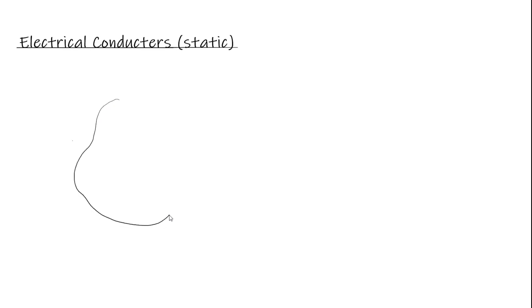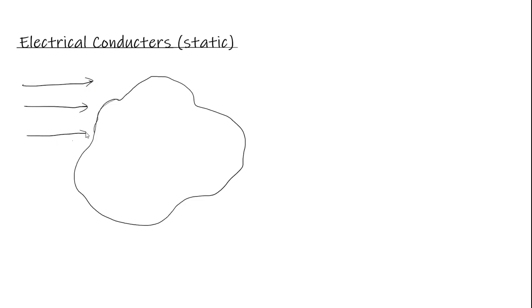Let's start by drawing a conductor of arbitrary shape. What do we know about it? Let's imagine it was in some electrical field. We can figure this out by considering some properties of conductors. Conductors are materials that have free-moving electrons — that's why they're used for wires, so that electrons can travel and you get electrical currents. This is as opposed to an insulator, where the electrons are static and can't move.